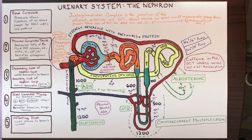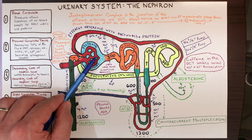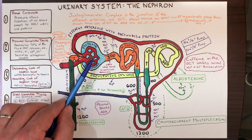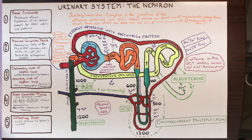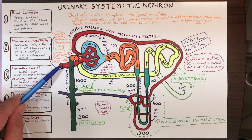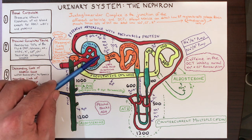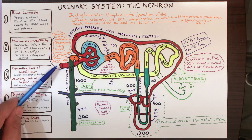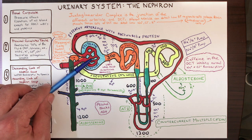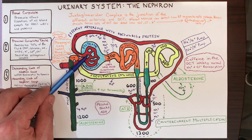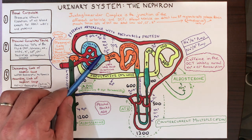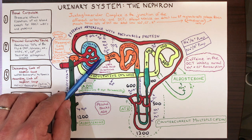Let's begin with the first region, the renal corpuscle. We can divide this into two parts: the glomerular capsule, which is this outer shell, and the glomerulus, which is just this capillary here. This whole thing starts with blood entering the kidneys, going through a set of different vessels, and finally hitting what we call the afferent arteriole — afferent with an A because it's going towards the renal corpuscle. Blood flows through the afferent arteriole, then enters the glomerulus, and it's here that it's filtered into the filtrate space.